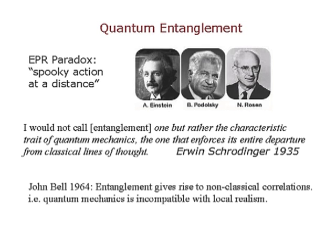It was Schrödinger who distilled the notion of quantum entanglement from that paper, and he made a very forward-looking statement: 'I would not call entanglement one but rather the characteristic trait of quantum mechanics, the one that enforces its entire departure from classical lines of thought.' This is quite remarkable for that time.